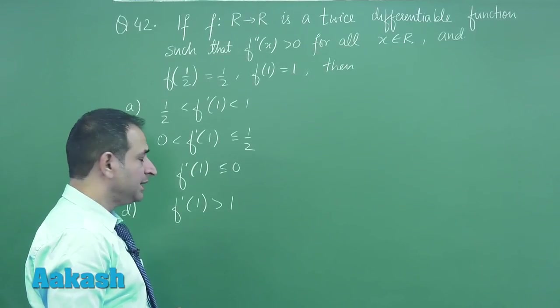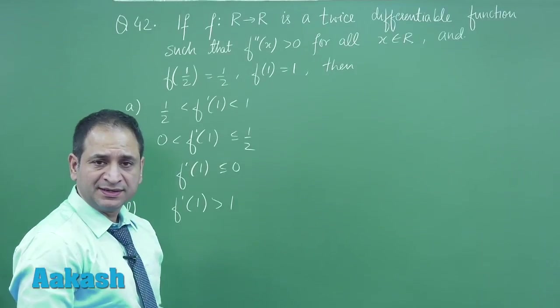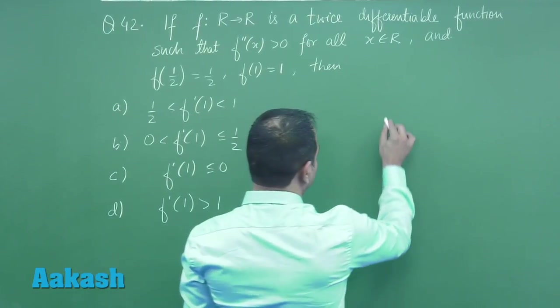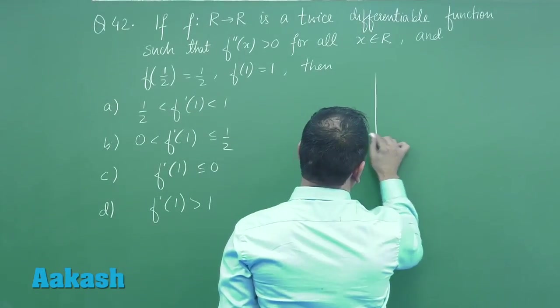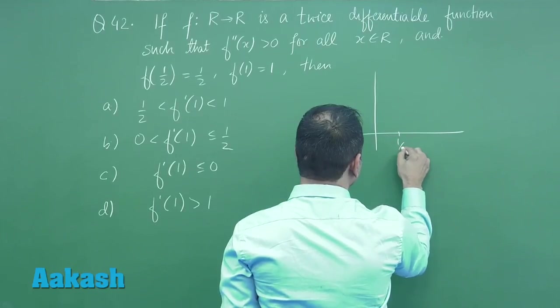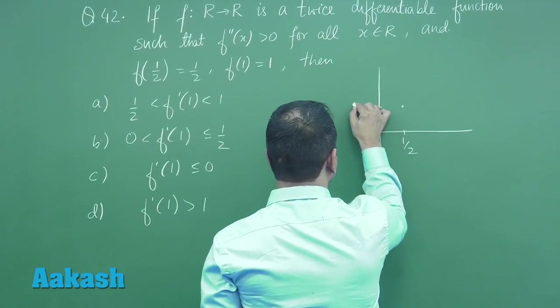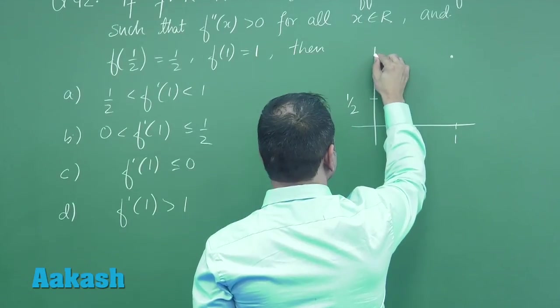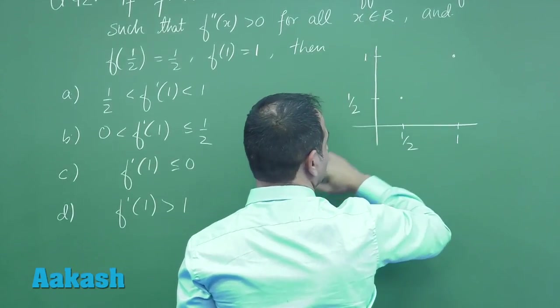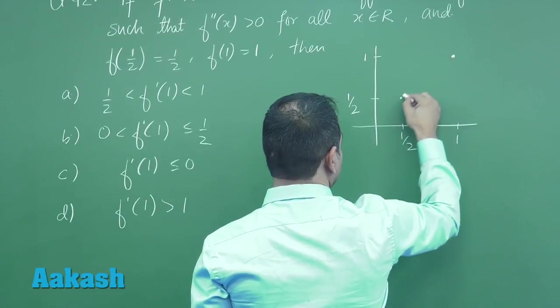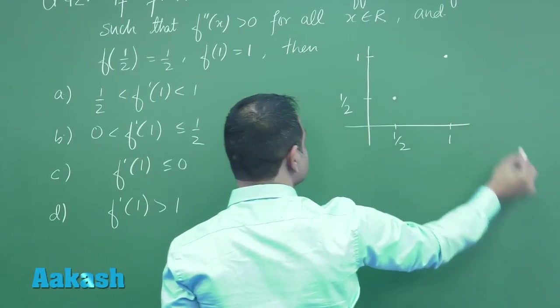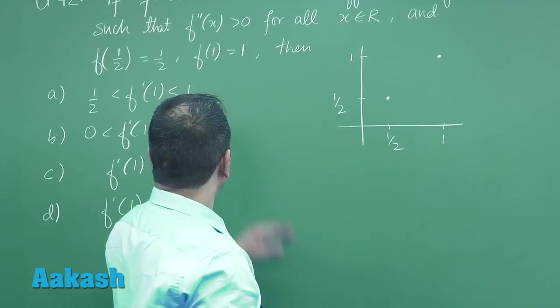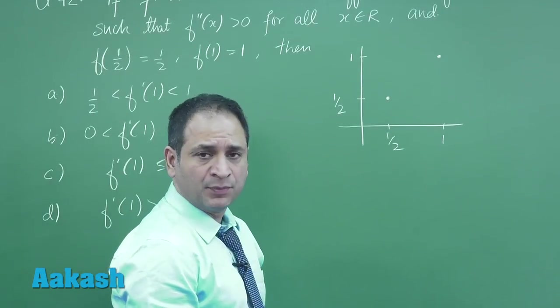Let us understand how this question is framed. We can take the help of a graph here. It is given the value at 1/2 is 1/2 and the value at 1 is 1. Now the function is differentiable, that means it is also continuous, and the double derivative is positive here.